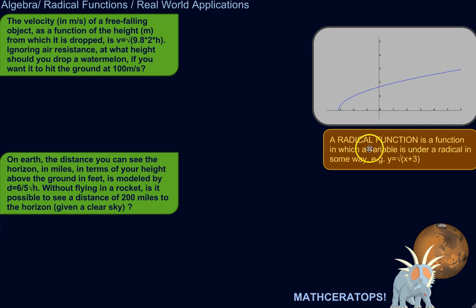So a radical function is a function in which a variable is under a radical in some way, like y equals the square root of x plus 3. You know, the variable x is under that radical. And they generally take this form. They could be reflected or whatever, but this sort of thing, right?